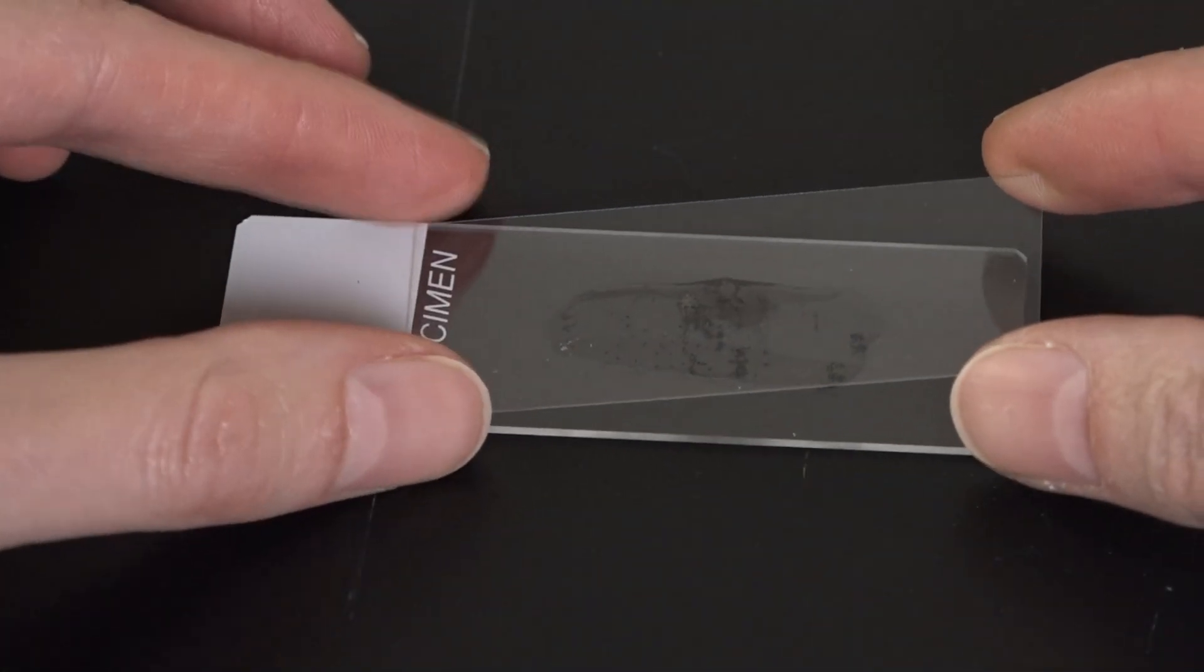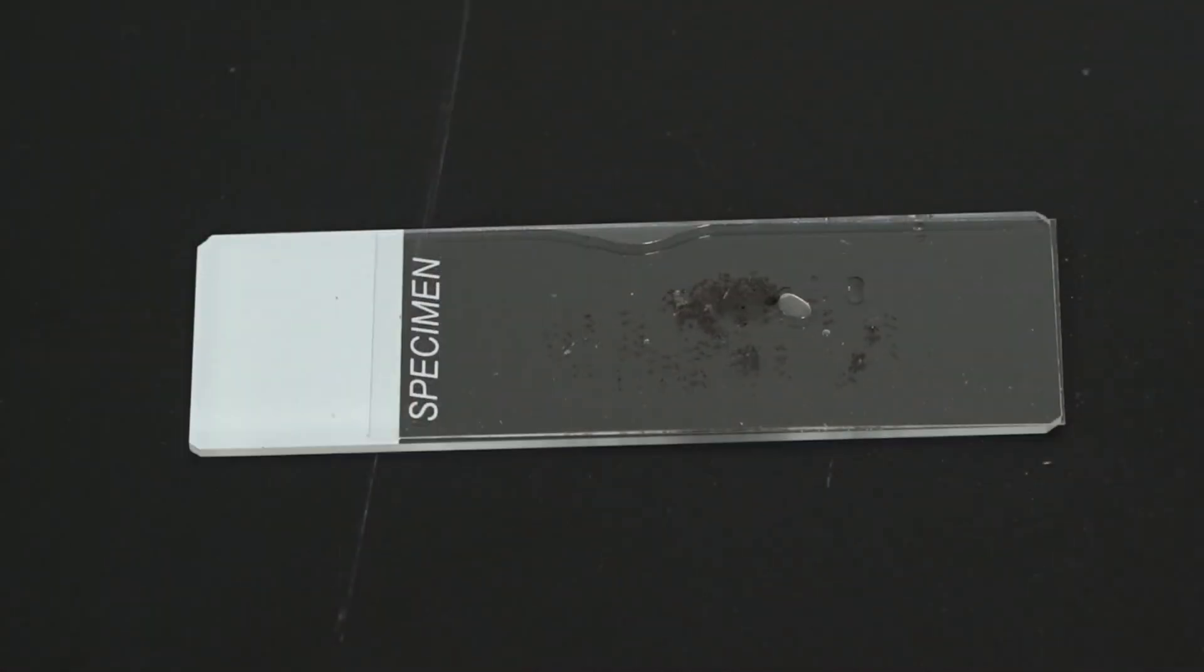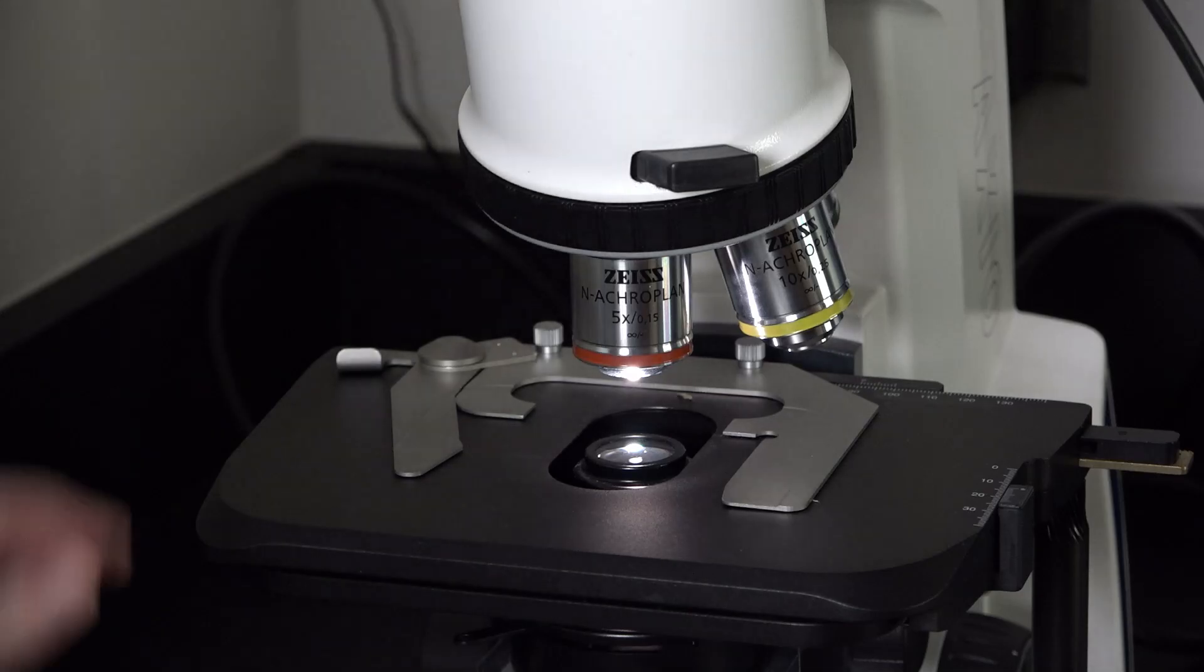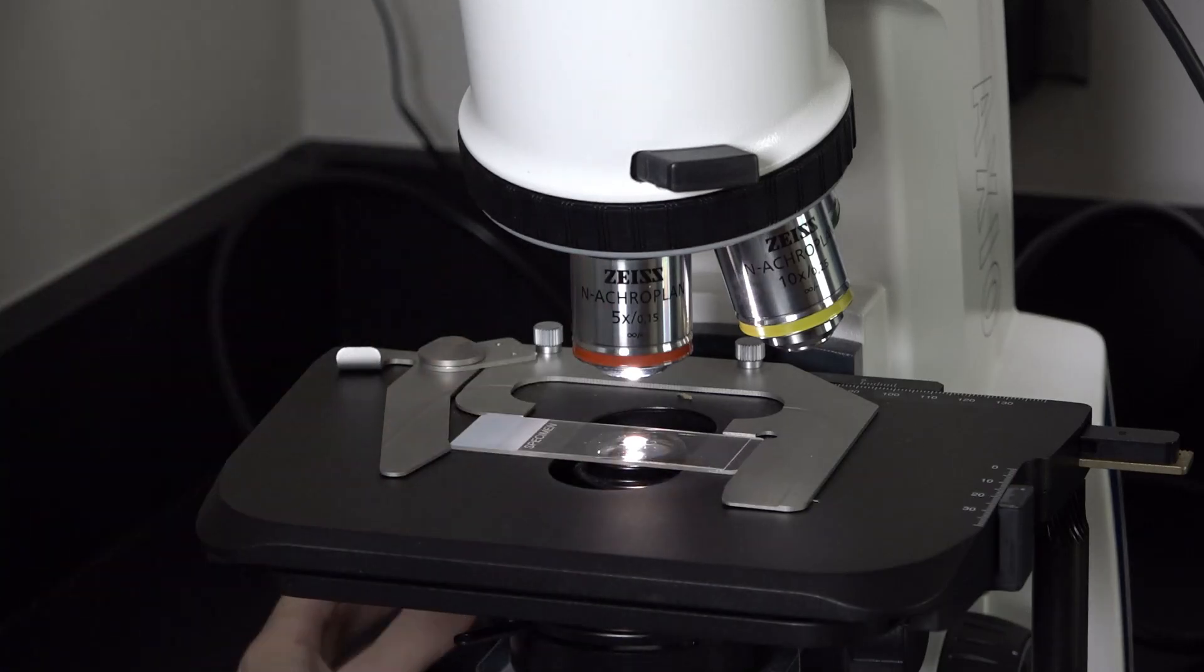Next, I'll put a cover slip over the perithesia and gently tap the cover slip with the pencil eraser to squash them and release the asci. Now it's time to observe my slide under the light microscope.